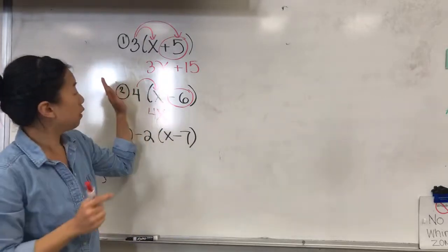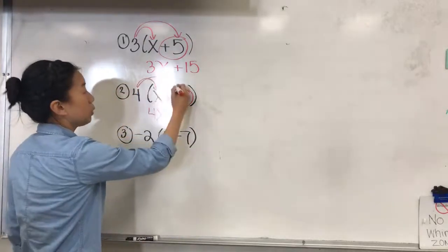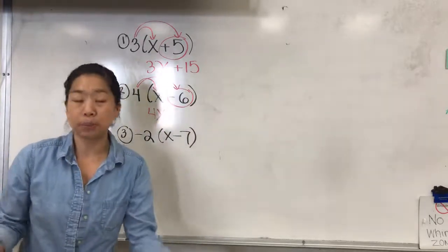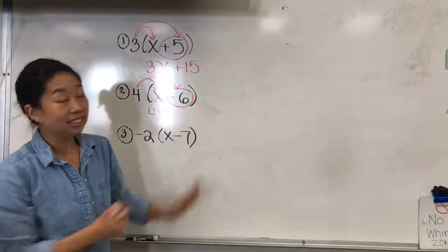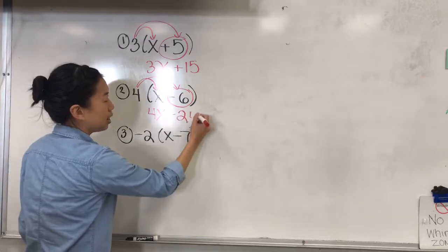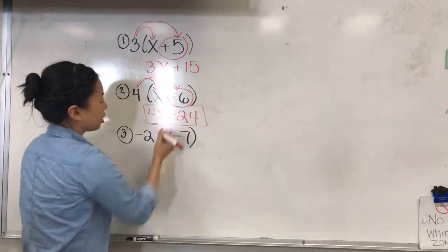Now I have 4 times negative 6. So I'm going to rainbow, distribute, multiply 4 times negative 6, and 4 times negative 6 is going to be negative 24. So there's my answer.